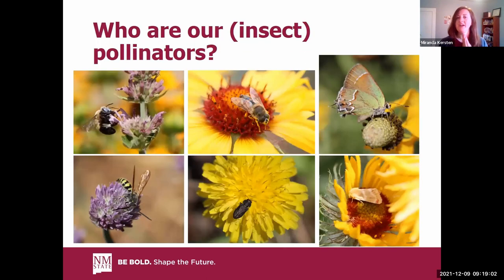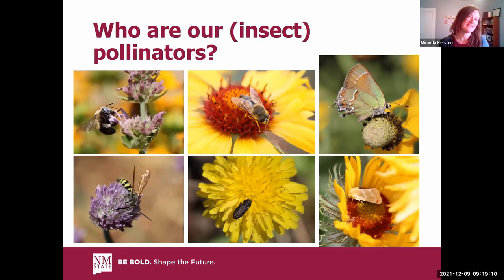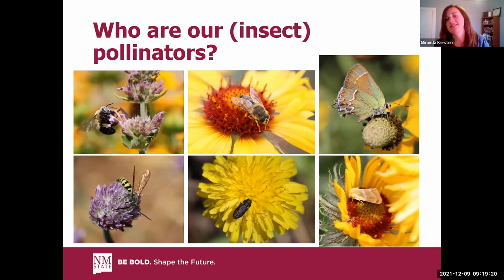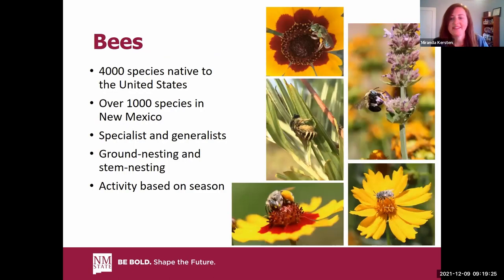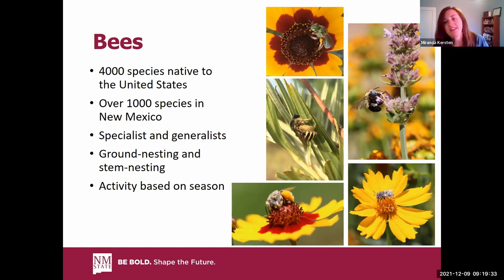Just an overview of our insect pollinators: the biggest group are bees, but wasps may also visit flowers, as do different flies, beetles, and butterflies and moths. Today we're just going to focus on the bees. They're the most efficient pollinators because they are the only insect that relies on pollen for both the larval and the adult stage.